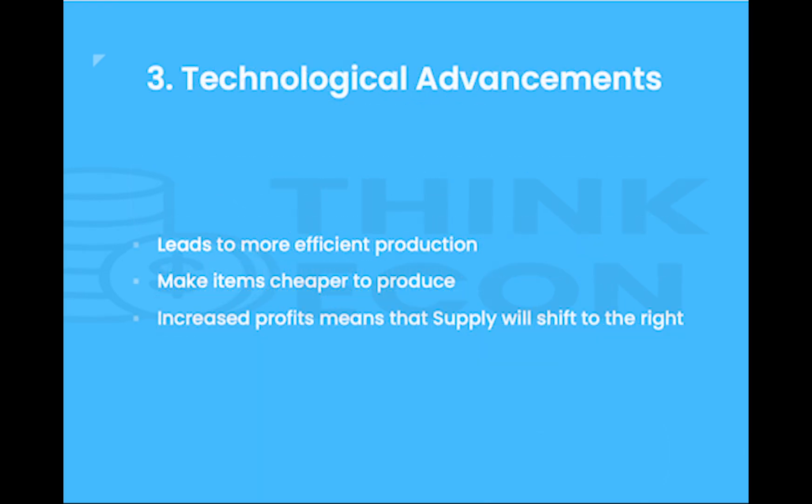Third, we have technological advancements. Technological advancements lead to more efficient production. In turn, this makes goods relatively cheaper to produce, similar but not quite the same as the first shift factor. Increased profits mean that supply will shift to the right as firms decide that they want to supply more at this lower cost of production.